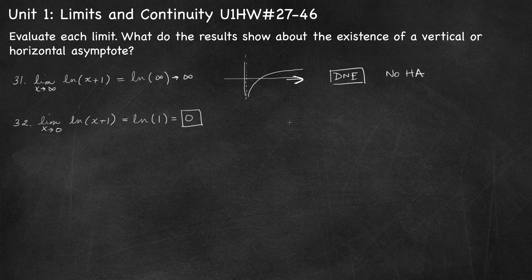Looking back at number 31, I should have been more careful: to rule out horizontal asymptotes altogether we need to check both the limit as x approaches infinity and as x approaches negative infinity. However, the natural log function has a domain restriction, so we can't approach negative infinity. It is true there's no horizontal asymptote, but I was a bit hasty in jumping to that conclusion.